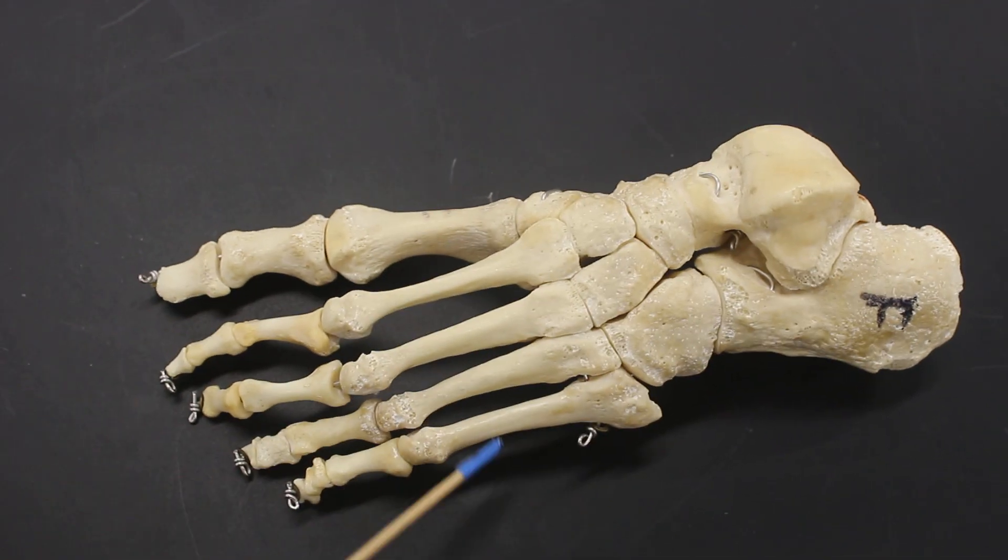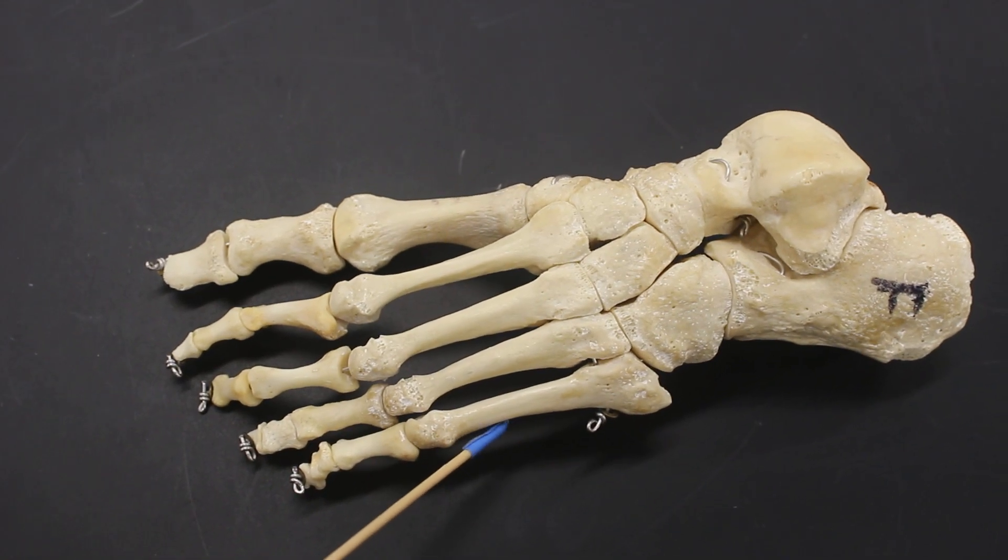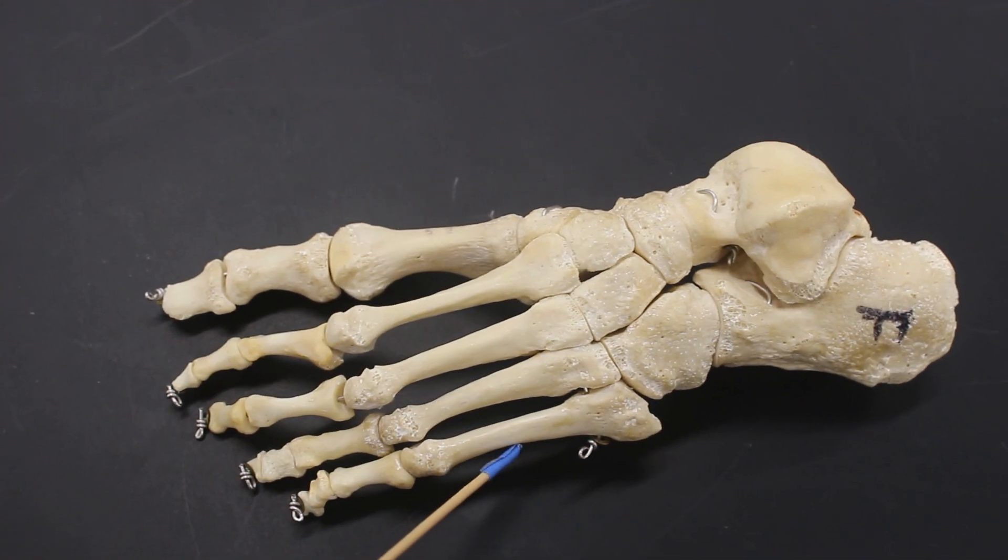And the heel bone is the calcaneus. These five bones are the metatarsals. One, two, three, four, five metatarsals.